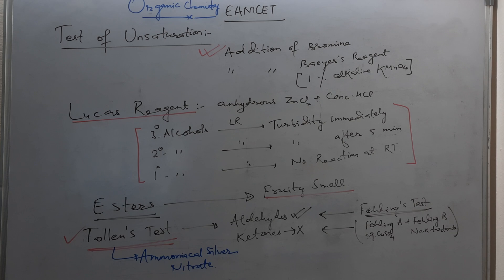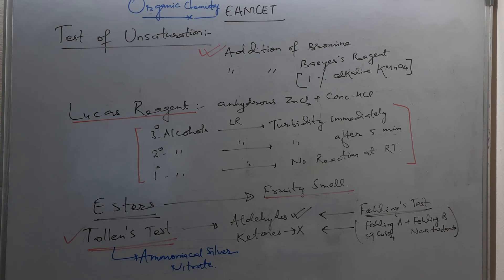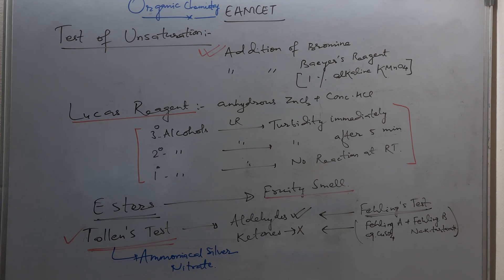Also remember that alcohols react with copper at 573 K: primary alcohol gives aldehyde, secondary alcohol gives ketone, and tertiary alcohol gives alkene. This reaction is also used to distinguish between primary, secondary, and tertiary alcohols.